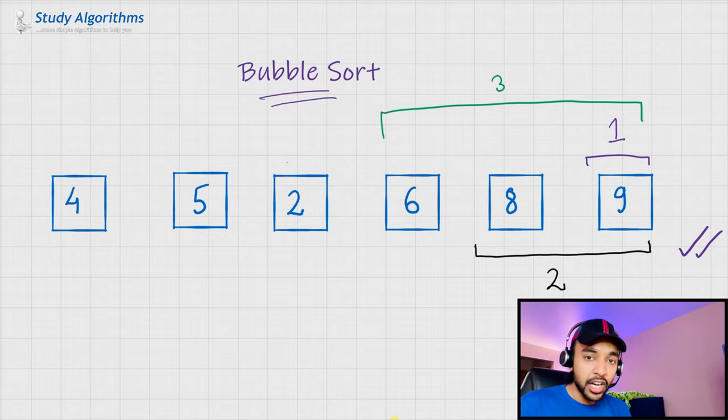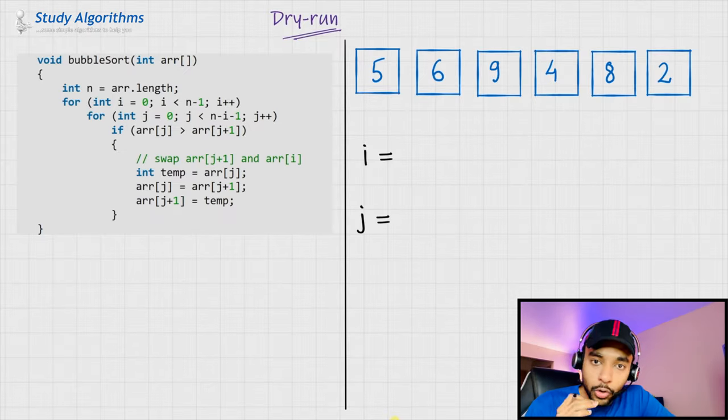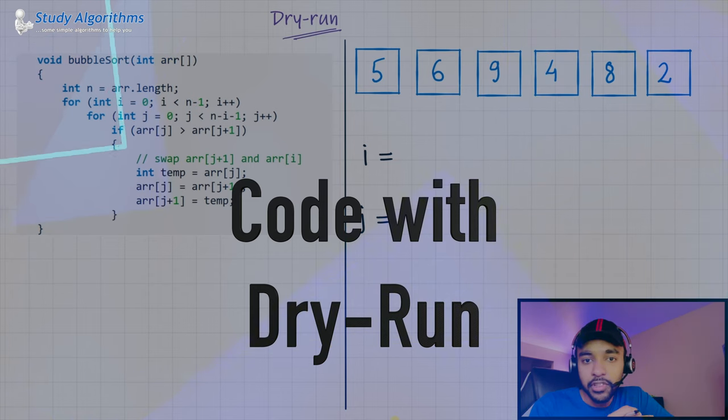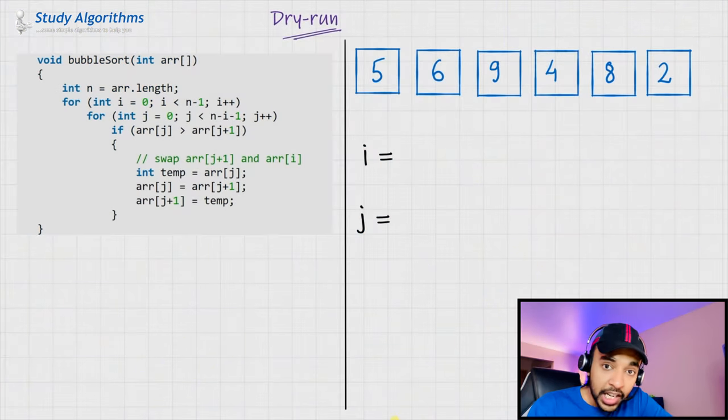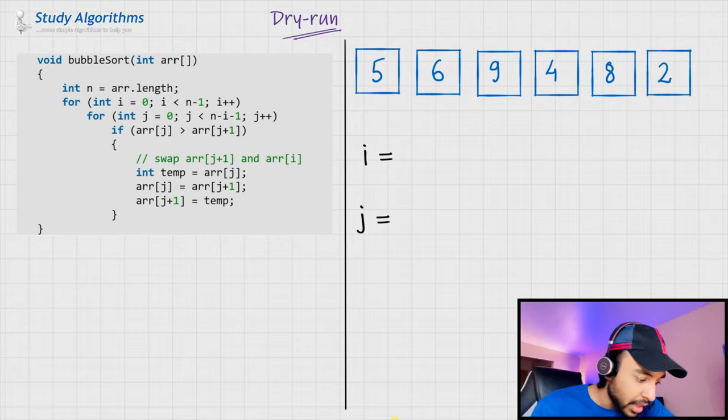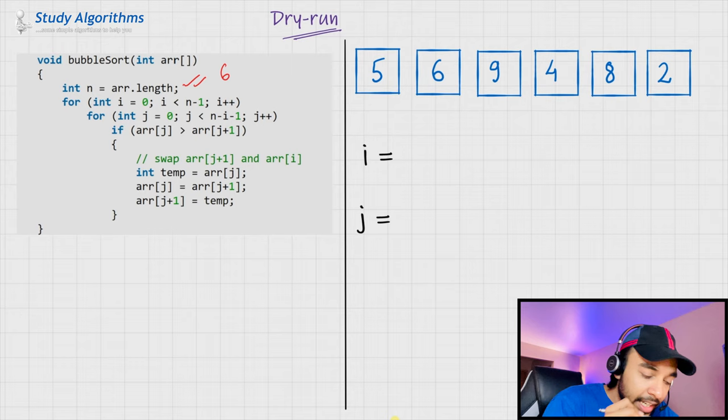Now, let us try to look at the dry run of the code and see how it actually works. To understand the dry run, I am taking the same example array that we just discussed. On the left side of your screen, you have the actual code to perform a bubble sort. And on the right, we would be seeing how it goes into action. So, n is my array length. In this case, the value of n is 6.